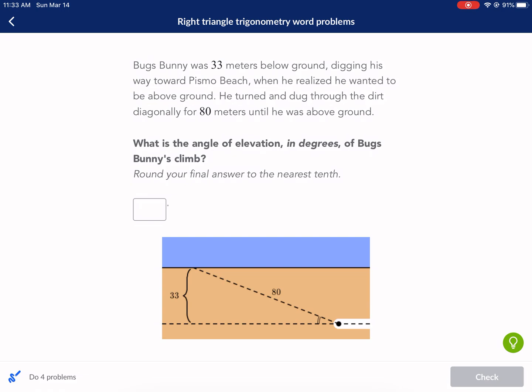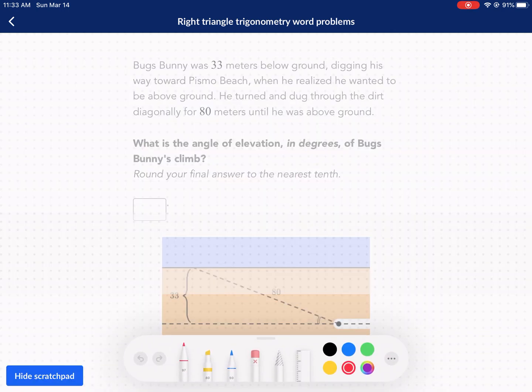Very relevant problem we have going on here. First off, we see that we have a triangle drawn here. I'm going to draw another one outside just so you guys can see it a little bit more clearly. Here's our triangle. We're given that it's 33 meters on this side. We're given that it's 80 meters right here.